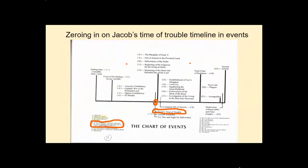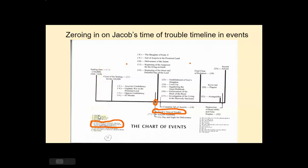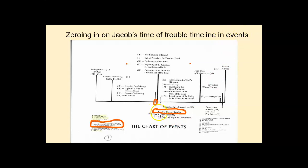Here is that chart again. On this side, each item has a supporting reference — this is a chart outline with inspired references to back up the timeline presented. Today's study will zero in on Jacob's time of trouble timeline and events. We want to closely examine this Jacob's time of trouble.